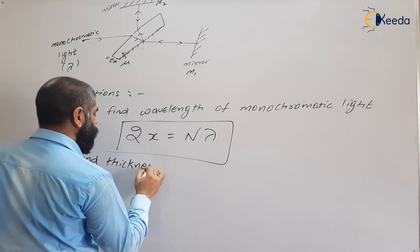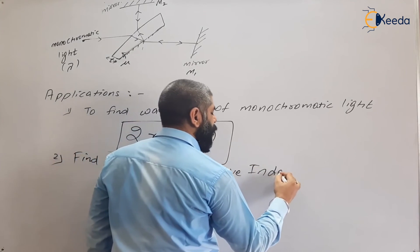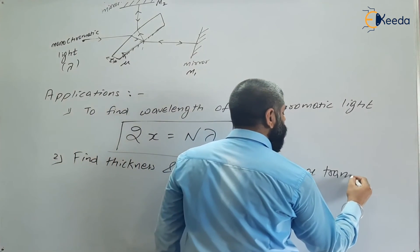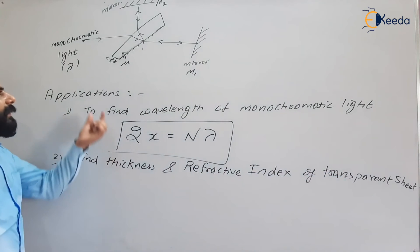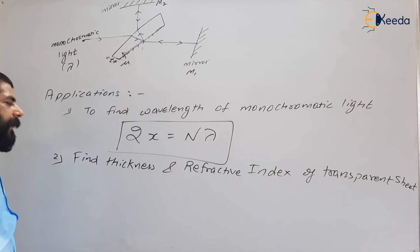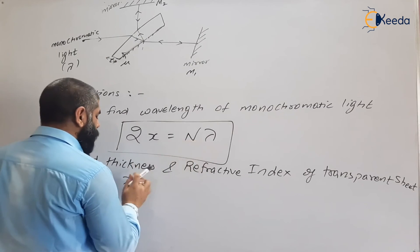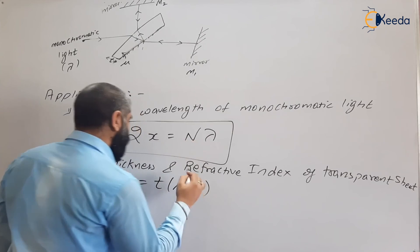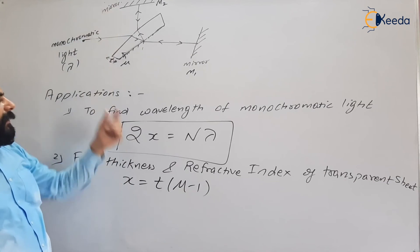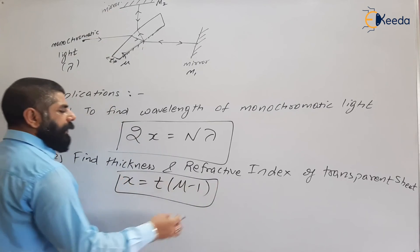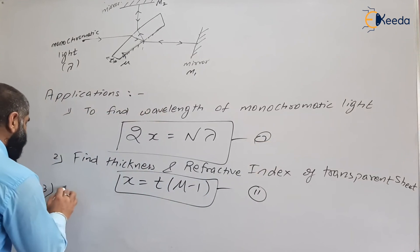The second application is to find the refractive index and thickness of a transparent sheet. We use the equations: 2x = nλ (equation 1) and x = t(μ − 1) (equation 2), where t is the thickness and μ is the refractive index of the sheet. Combining these two equations allows us to calculate the unknown quantities.